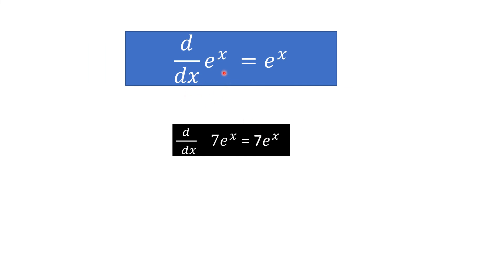The derivative of e^x is simply e^x — it stays as it is. If something is multiplied by e^x, it features in the answer as well. For example, derivative of 7e^x is 7e^x. This term must be multiplied by e^x, not added or subtracted.